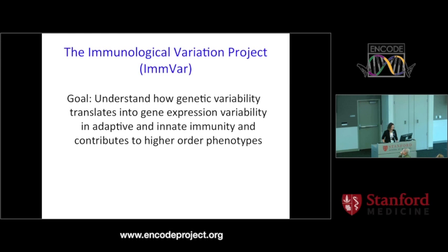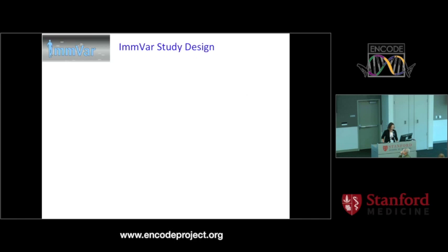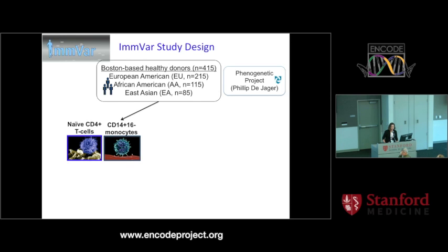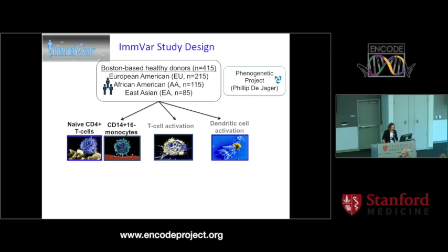The goal of this project was to understand how genetic variation translates into gene expression variation among individuals in both adaptive and innate immunity, and how that relates to higher order phenotypes. This is a collaborative project started when I was at Harvard, involving people at Harvard and Stanford. We collected a cohort of just over 400 individuals in the Boston area representing three ancestry groups: European Americans, African Americans, and East Asians. We sorted CD4 T cells and monocytes from all individuals, and also activated T cells and monocyte-derived dendritic cells.